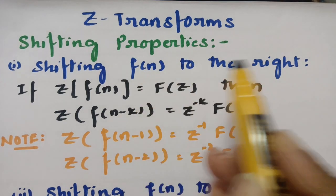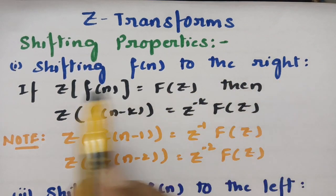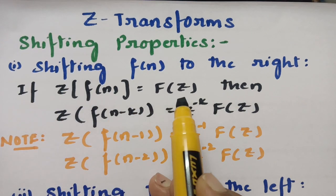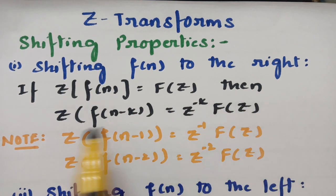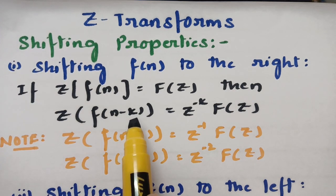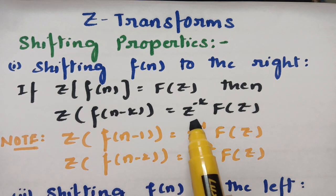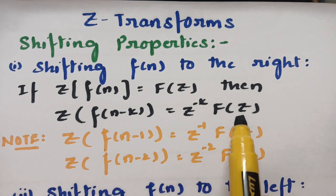If f(n) is shifted to the right, as you know the Z transform of f(n) is equal to capital F(z). Then Z of f(n minus k) — so this f(n) is shifted to the right side — the value will be z to the power of minus k multiplied by F(z).